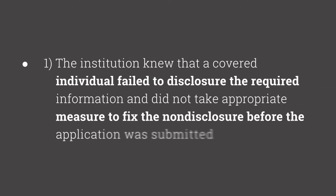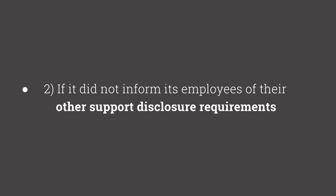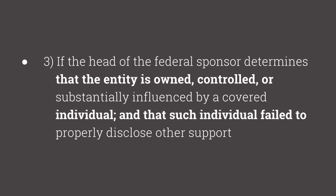One, if the institution knew that a covered individual failed to disclose the required information and did not take appropriate measures to fix the non-disclosure before the application was submitted. Two, if it did not inform its employees of their disclosure requirements. Or three, if the head of the federal sponsor determines that the entity is owned, controlled, or substantially influenced by a covered individual and that such individual failed to properly disclose other support.